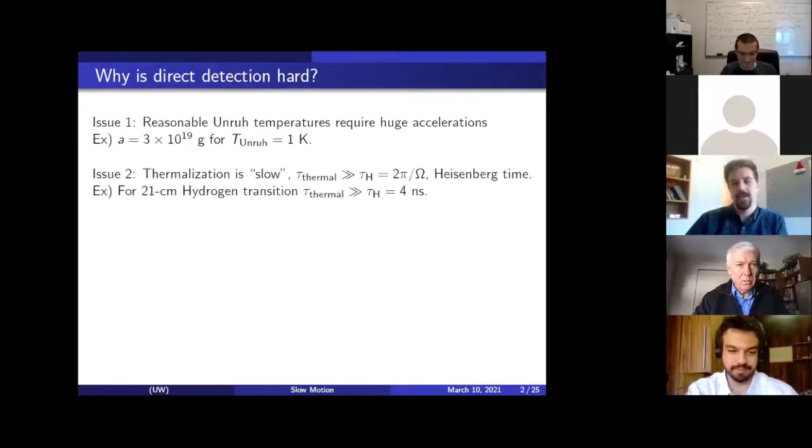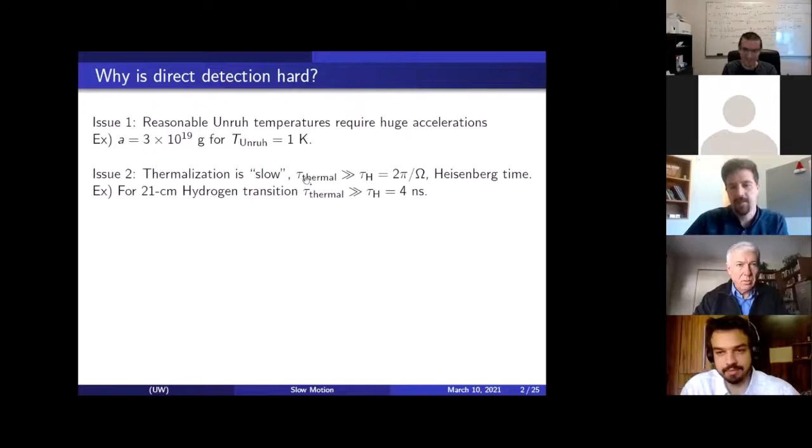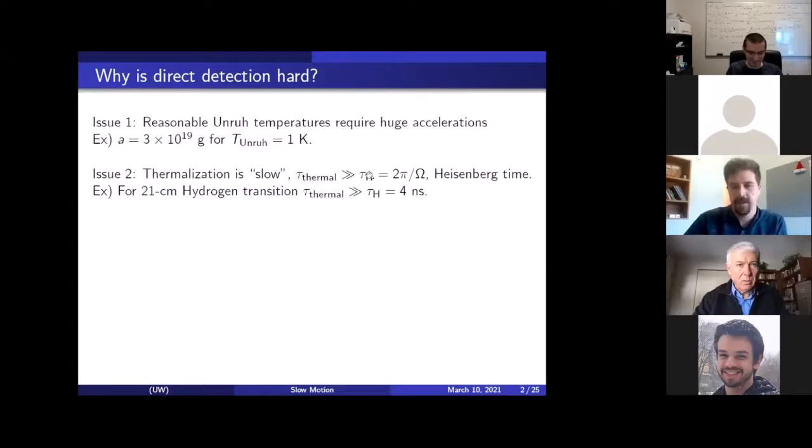So issue number one, which is much discussed, is that reasonable Unruh temperatures require huge acceleration. For instance, one Kelvin requires 10 to the 19 Gs, which is the strength of gravity on Earth. So that's a very common, much discussed problem. There's a second issue, which is not so well discussed, is that thermalization is a slow process. The thermalization time for any thermometer has to be much larger than the Heisenberg time of the thermometer.